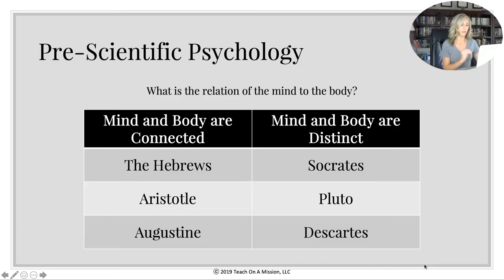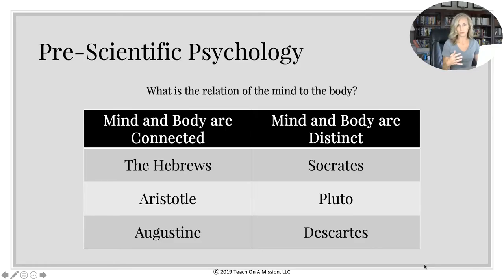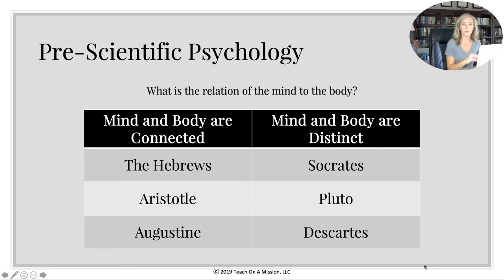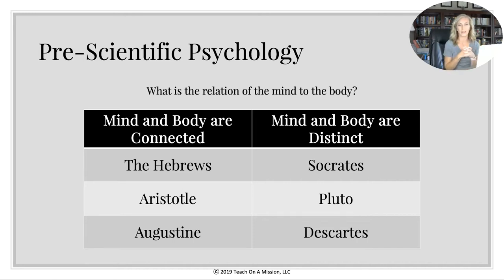What is the relation of the mind to the body? That was really one of those first early philosophical questions. The Hebrews, Aristotle, and Augustine — those philosophical contributors — believed that the mind and body are connected, are one entity.